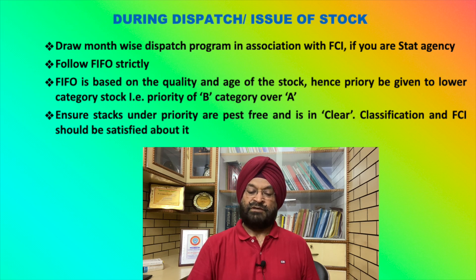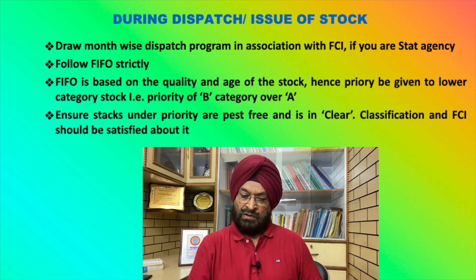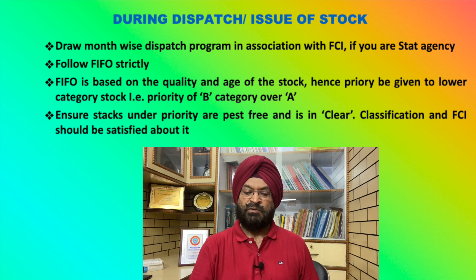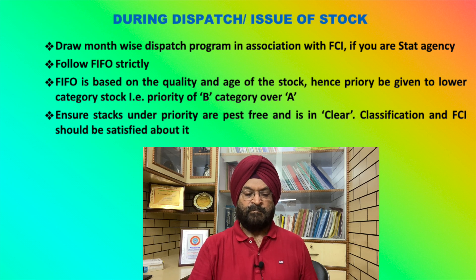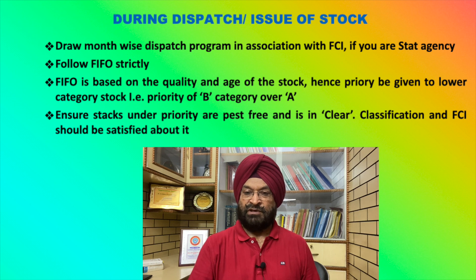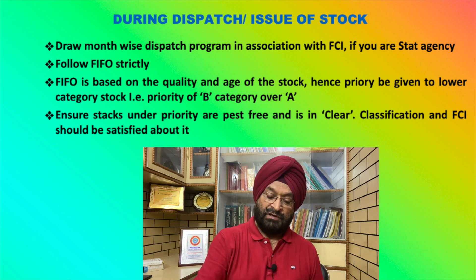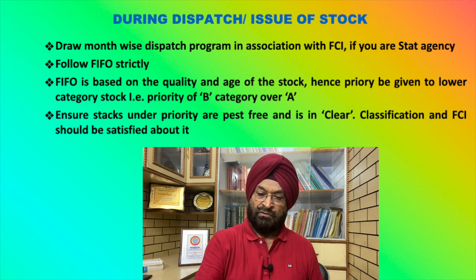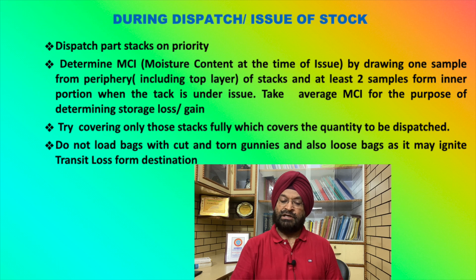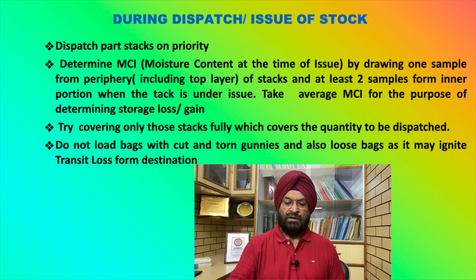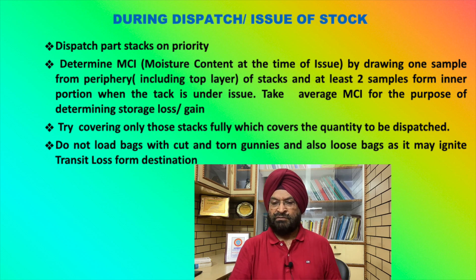For dispatches, draw a month-wise dispatch program in association with the FCA if you are a state agency, or follow the FCI's own program. Follow FIFO — first in, first out — based on the quality and age of the stock. Give priority to lower-category stock, for example B-category over A-category. Ensure that stacks under priority dispatch are pest-free and in clean condition to the satisfaction of the FCA before dispatch, otherwise quality cuts for infestation will be invited. Dispatch part-stacks first after taking FCA into confidence. Determine moisture content at the time of issue by drawing one sample from the periphery and at least two samples from within the stack, and take the average as MCi.